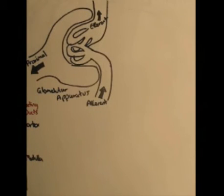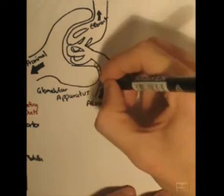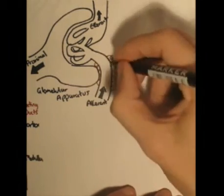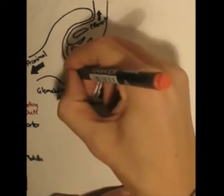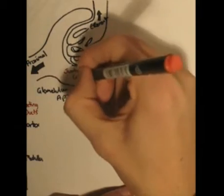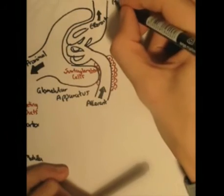Now around the afferent arteriole and part of the efferent arteriole, the one coming out, are these specialized cells. These ones are called red, we will just depict it as red. And these are called the juxtaglomerular cells. These cells are what secrete renin.